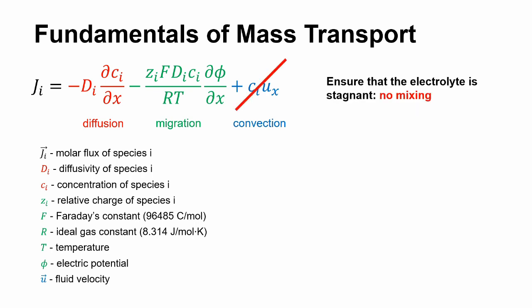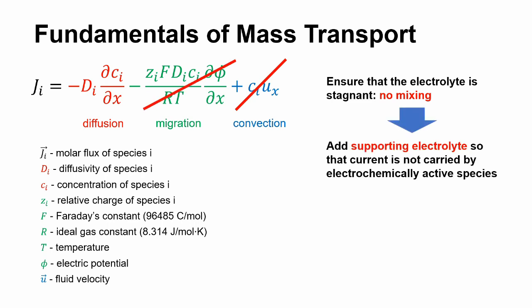First, the electrolyte must remain stagnant, which eliminates convection. Then, a high concentration of salt that would not undergo any redox reaction in the potential range of interest, supporting electrolyte, can be added. As a result, current will be carried predominantly by the supporting electrolyte, effectively eliminating the migration of electrochemically active species.